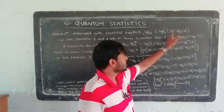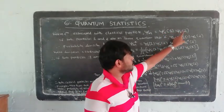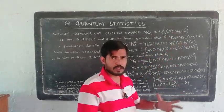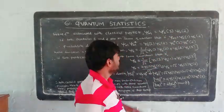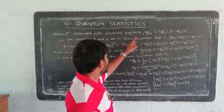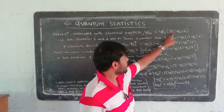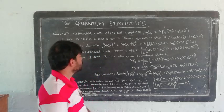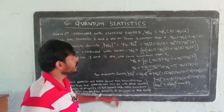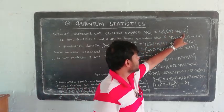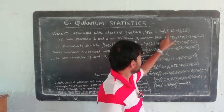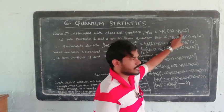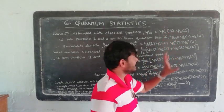If we consider the two particles: psi_a of 2, psi_b of 1, then psi_a of 1, psi_b of 2. The wave function is psi_a of 1, psi_b of 2. These are the two particles, 1 and 2, where 1 is in quantum state a and 2 is in quantum state b.